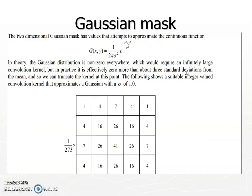The Gaussian mask ideally should be an infinite-sized mask, but we truncate it to 5x5 in practice. As we move away from the center of the mask, the Gaussian values decrease according to G(x,y) = (1 / 2πσ²) · e^(-(x²+y²)/σ²). So the values of the Gaussian mask decrease as we move away from its center.